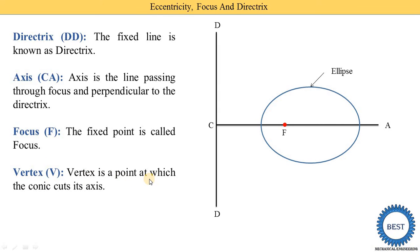Next term: vertex. Vertex is denoted as V. Vertex is the point at which the conic cuts its axis. So the ellipse is the conic and it cuts the axis — the line A to C — so that point is called the vertex V. It is also called the moving point. Focus is the fixed point and vertex is the moving point.